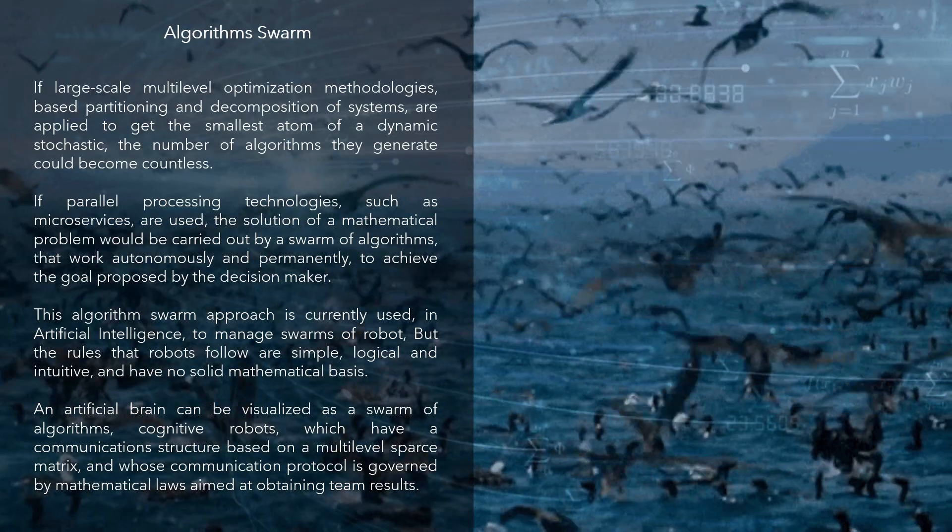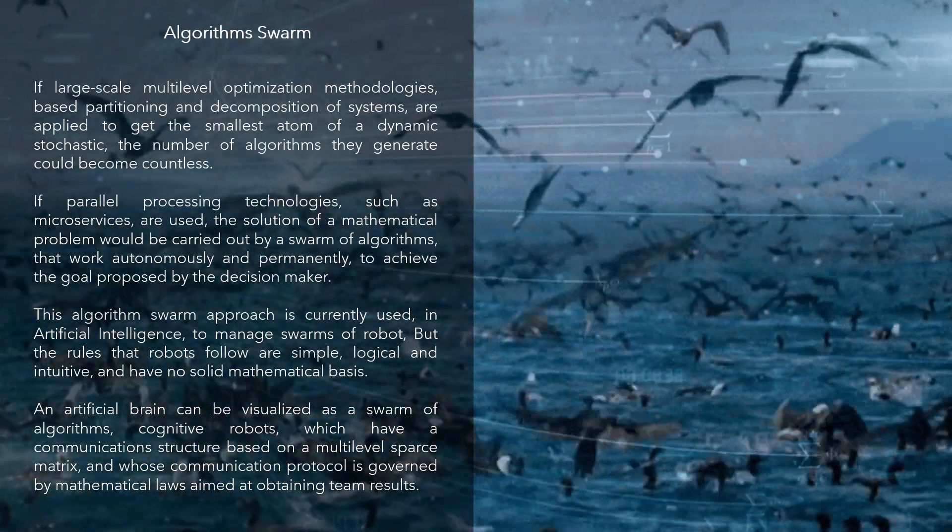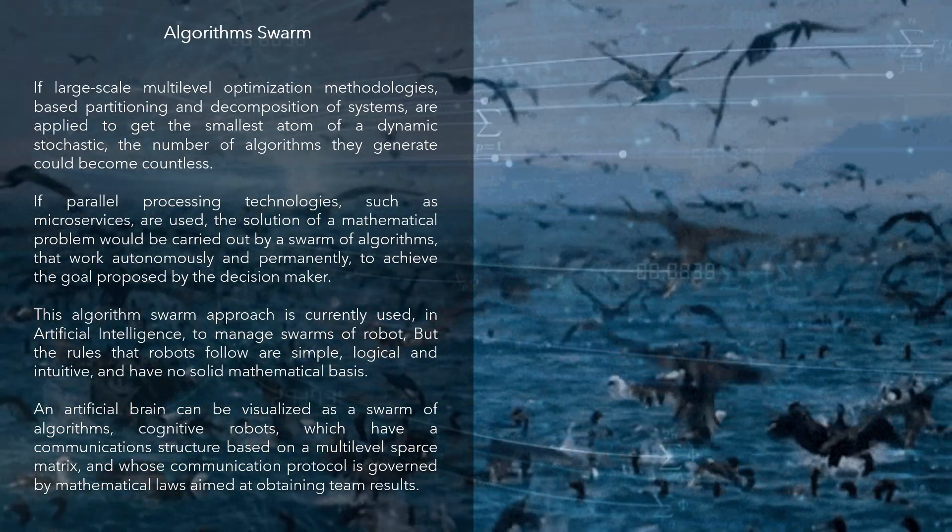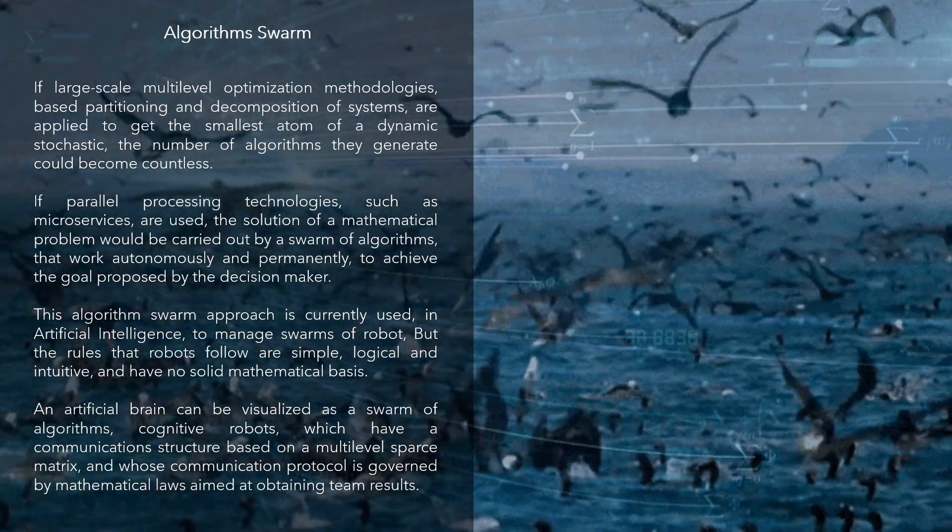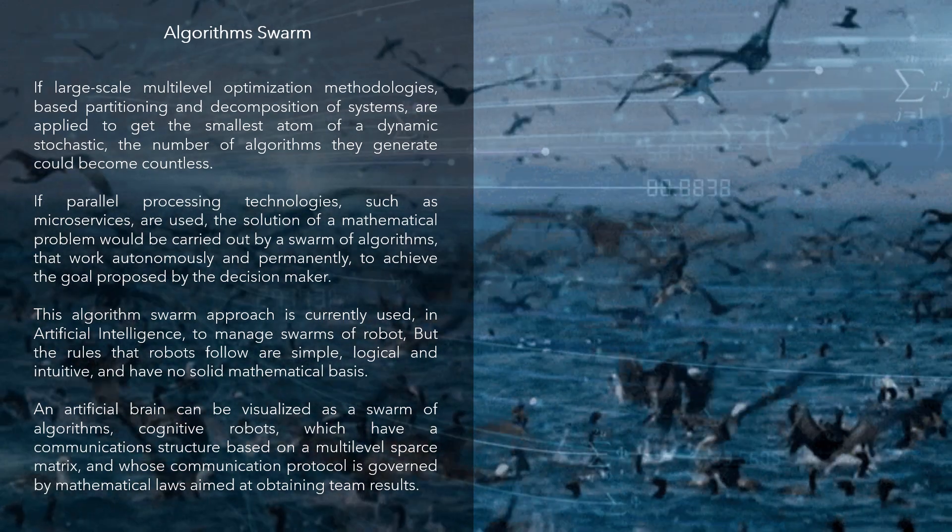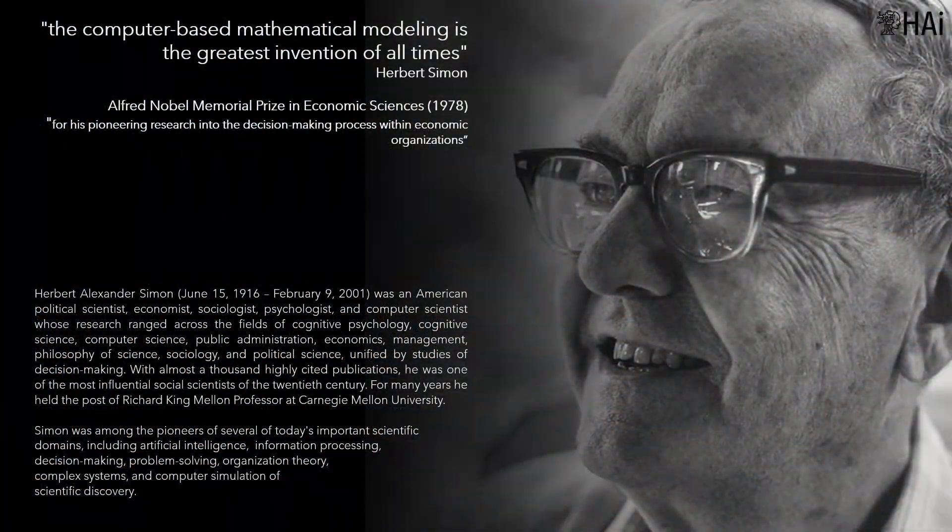An artificial brain can be visualized as a swarm of algorithms—cognitive robots—which have a communication structure based on a multi-level sparse matrix, and whose communication protocol is governed by mathematical laws aimed at obtaining team results.